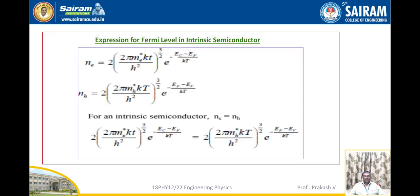Expression for Fermi energy level in intrinsic semiconductor. We already know the expressions for N_e and N_H. Since for an intrinsic semiconductor N_e equal to N_H, after simplifications we obtain (m_e*/m_H*)^(3/2) equal to exp(−E_F + E_V + E_C − E_F) / kT.